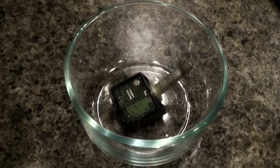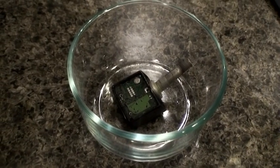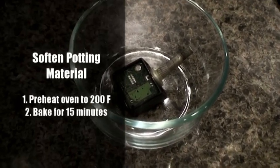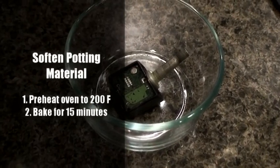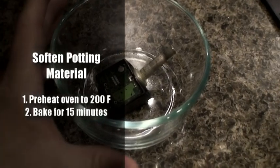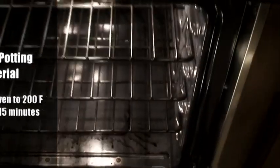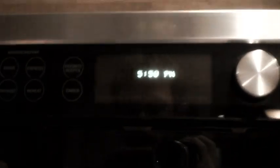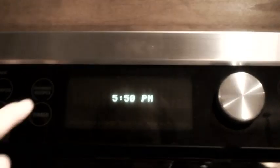Now we're going to bake the sensor for 15 minutes so that we can soften up the potting material and pop the circuit board out of the housing. So I've preheated my oven here and we're going to place the sensor in the middle rack. Then we'll set our timer for 15 minutes.